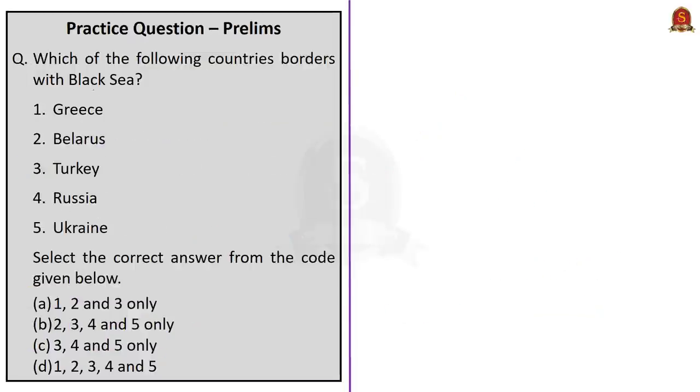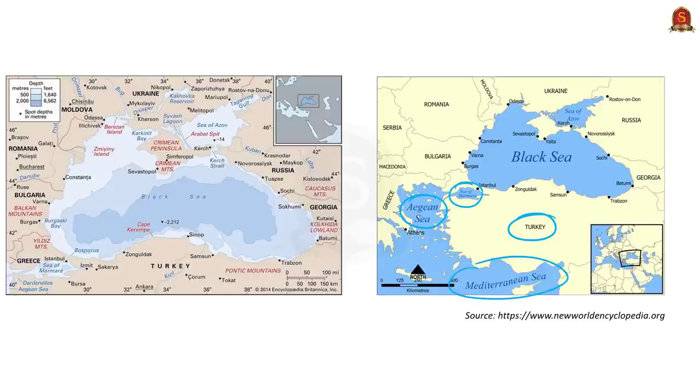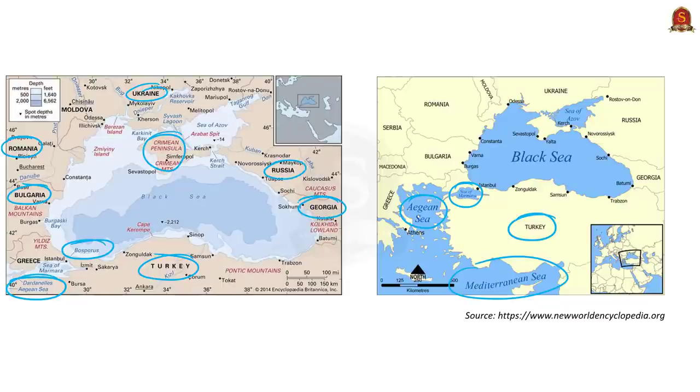This question is with reference to countries bordering Black Sea. Which of the following countries borders with Black Sea? Greece, Belarus, Turkey, Russia, Ukraine. Here the trick is Belarus. If you know Belarus is a landlocked country, you can easily arrive at the correct answer: option C, 3, 4 and 5 only. Belarus shares border with Poland, Latvia, Lithuania, Russia and Ukraine. The Black Sea is an inland sea between southeastern Europe and Turkey, ultimately connected to the Atlantic Ocean through the Mediterranean and Aegean seas and through various straits. The Bosporus Strait connects it to Sea of Marmara. The Strait of Dardanelles connects it to Aegean Sea region of Mediterranean. If you observe countries bordering the Black Sea, we can find Turkey to the south, Bulgaria and Romania in the west, Ukraine and Crimean Peninsula to the north, Russia to the northeast, and Georgia to the east.